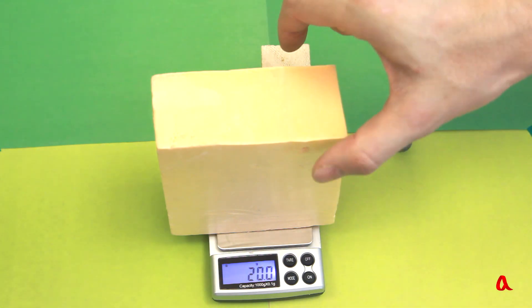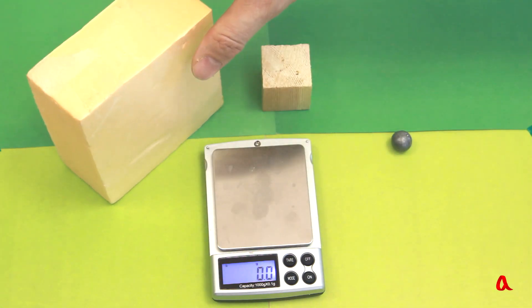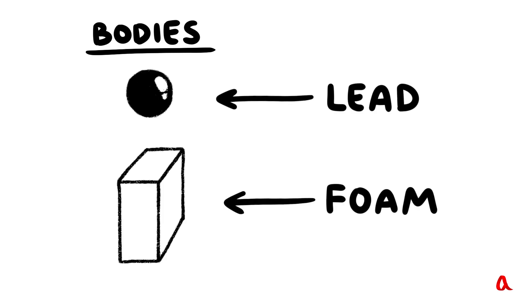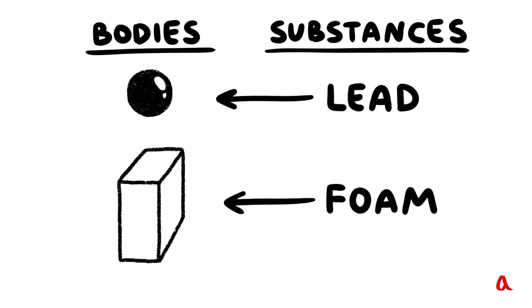The masses are identical but don't we usually say that lead is heavy and foam is light? The thing is that both a lead ball and a foam bar are bodies whereas lead and foam are the substances of which those bodies consist.